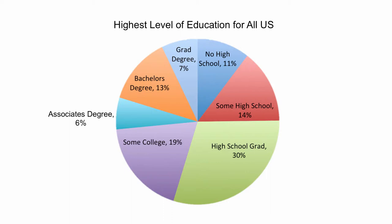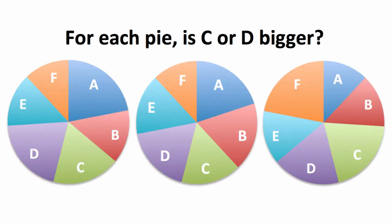The first set of charts consists of three pie charts. Each chart shows the percentage of respondents in each of six categories. Your job is to look at the pie charts and determine whether there are more people in slice C, which is green, or slice D, which is purple, in each pie chart. It turns out that it's hard to do.